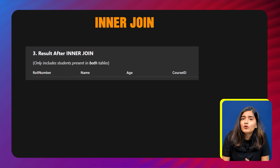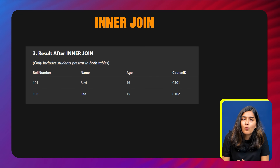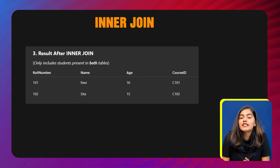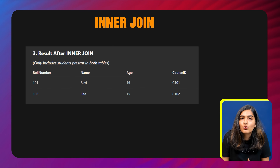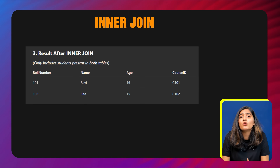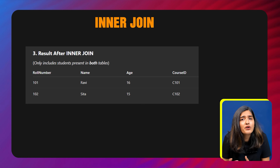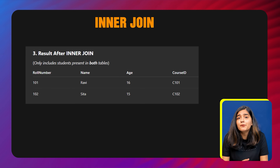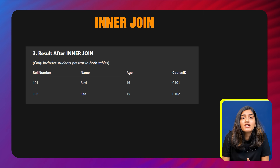And this is the output: Ravi is enrolled in course C101, and Sita is enrolled in course C102. You'll notice Aman didn't show up because he is not in the course table, and a student with roll number 104 didn't show up either because they are not in the student table. Inner join gives you results only when there is a match on both sides.